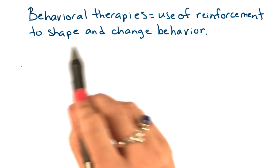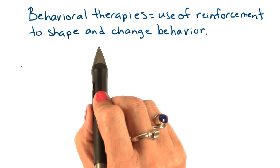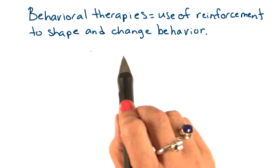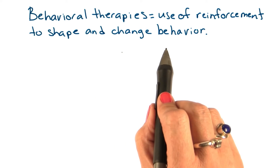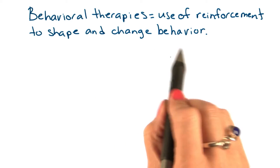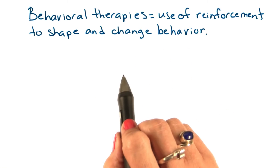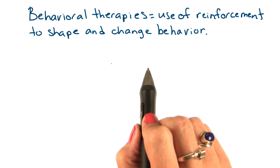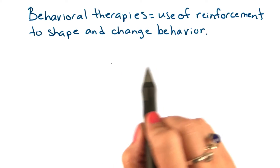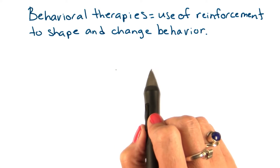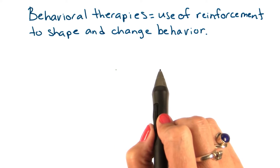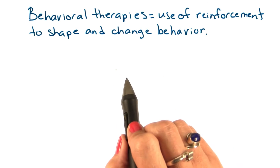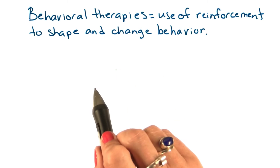A key idea to many behavioral therapies is the use of reinforcement to shape and change behavior. However, other techniques are used, such as extinction. This was used in the study I just talked about with the psychiatric nurse as a behavioral engineer — they used extinction to decrease symptoms of schizophrenia.